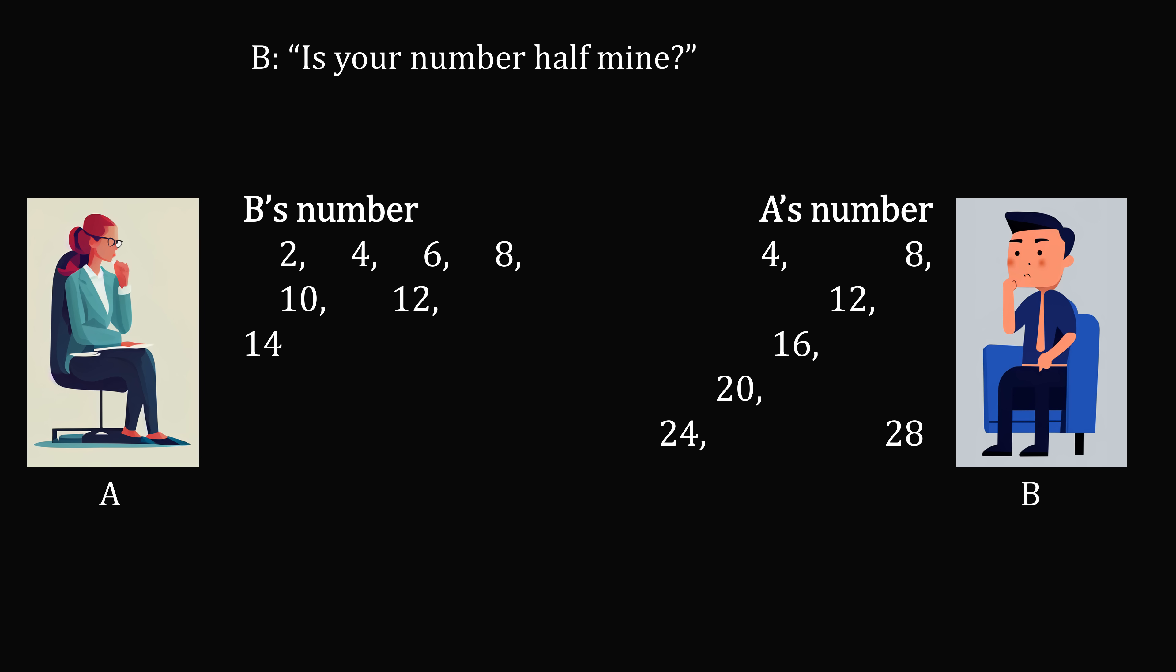Then B asks, is your number half mine? A says, I don't know. Now let's look at half of the possibilities for B's numbers. It'll be 1, 2, 3, 4, 5, 6, 7. So in order that A says, I don't know, it has to be one of these numbers. But looking at the list that B already knows, the only commonality will be the number 4. So B can deduce that A's number is 4. And finally, B says, I know your number. So A's number is 4, and this is how B is able to deduce it. What an incredible puzzle.